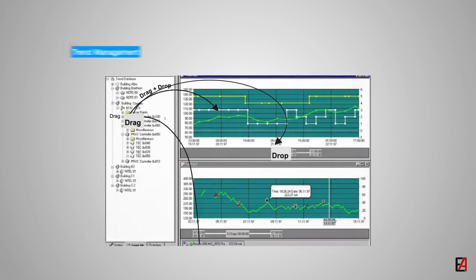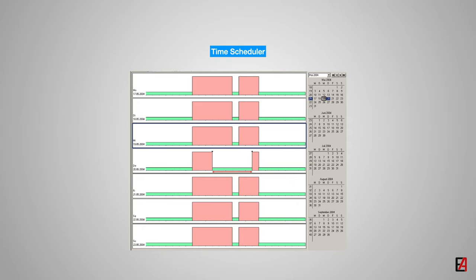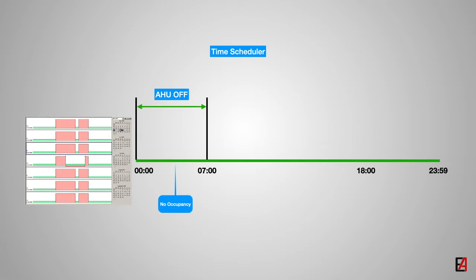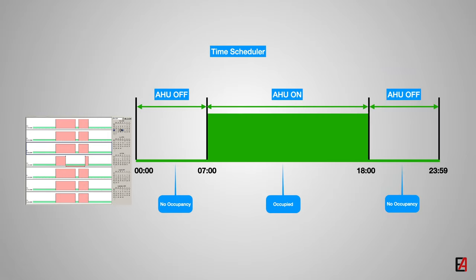In order to identify if the equipment is performing efficiently, BMS provides a trend management functionality. It displays raw values in a time-based graph. These graphs can be exported into an Excel format for analysis. Since the BMS system is also referred to as an energy management system, it provides a functionality to control equipment based on time, known as a time scheduler. The time scheduler lets the operator decide when to turn on and turn off the equipment. For example, the air handling unit serving an office can be programmed to turn on only during work hours from 7am to 6pm. This is very helpful as equipment can be configured to turn off when there is no occupancy.